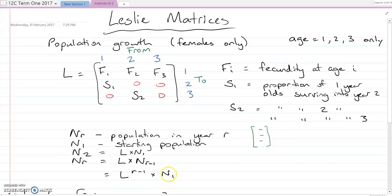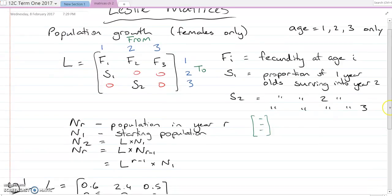Times our starting, because our N1 didn't have an L in it, it was just N1. So N6, if you were looking at the population in the sixth year, you would times the matrix L to the power of five, so that you multiply it together five times, and then times that by the initial population.